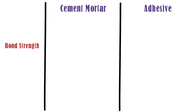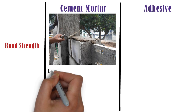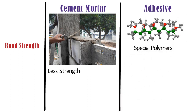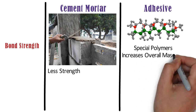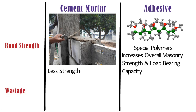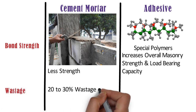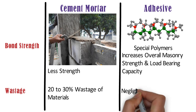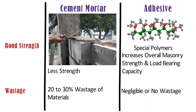Bond strength. The bond strength of cement mortar is less as compared to AAC block adhesives. Whereas, AAC block adhesives contain special polymers which give high adhesive strength, which ultimately increases overall masonry strength and load-bearing capacity. Wastage. Cement sand mortar accounts for 20-30% of wastage during its use. Whereas, in case of AAC block adhesives, there is negligible or no wastage during its use.